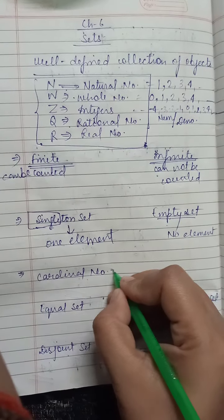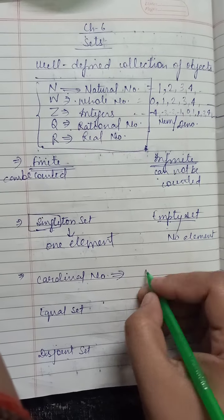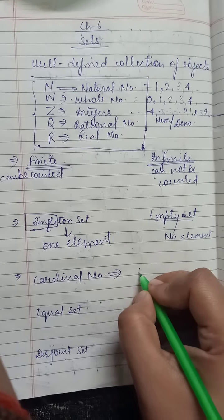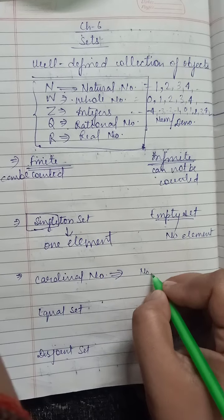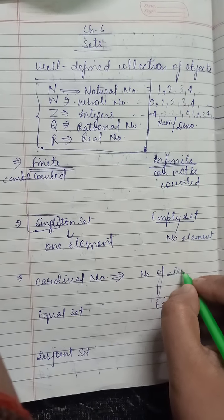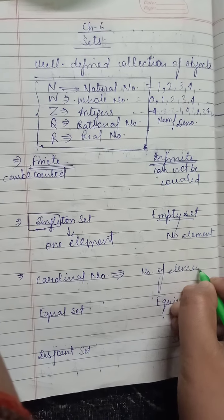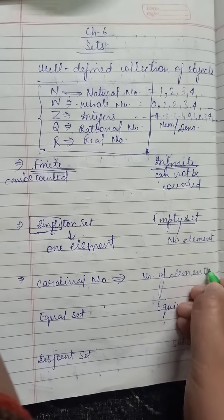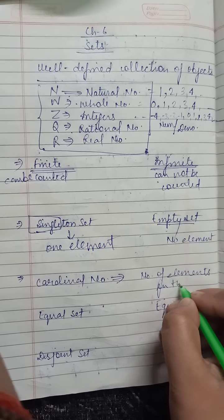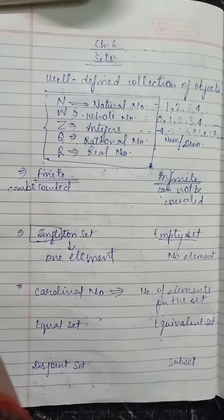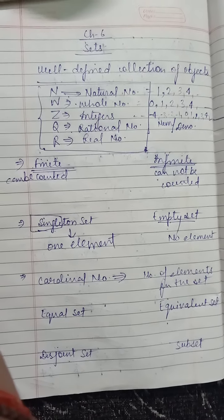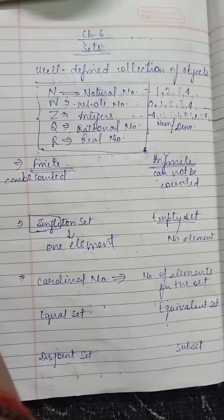Cardinal number — what is cardinal number? Cardinal number is the number of elements in the set.